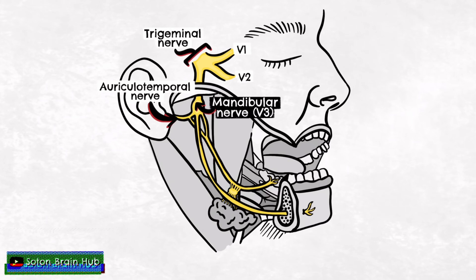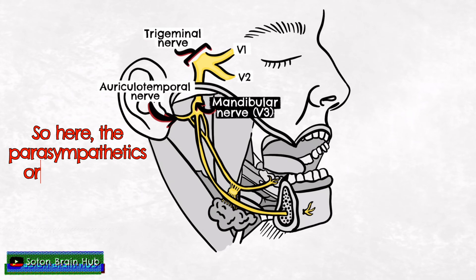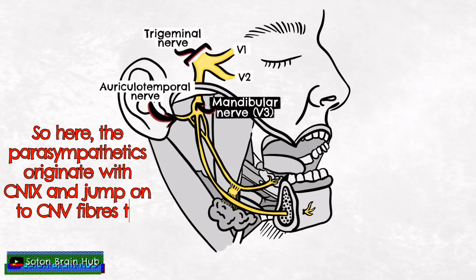The auriculotemporal nerve carries parasympathetic fibres as well as sensory fibres; however, it is important to note that despite travelling in the auriculotemporal nerve, these parasympathetic fibres actually originate from the ninth cranial nerve, the glossopharyngeal nerve. These parasympathetic fibres innervate the parotid gland.